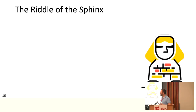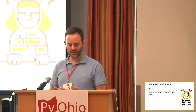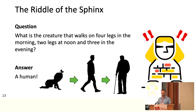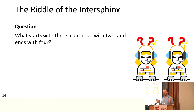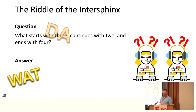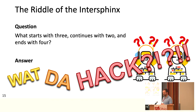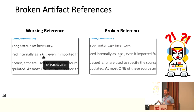I'm going to divert a little bit. This is the Riddle of the Sphinx — about 4,000 years old. Spoiler warning: what is the creature that walks on four legs in the morning, two legs at noon, and three in the evening? A human — babies walk on four, adults on two, and then need a little help as one gets older. So what is the riddle of the InterSphinx? What starts with three, continues with two, and ends with four? 'What the hack?' — and this is what I would say most times when I tried to create a cross-reference to another project, because you can break your references if you don't format them correctly.